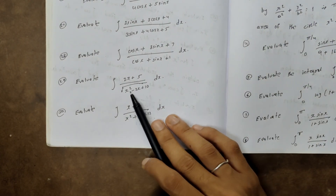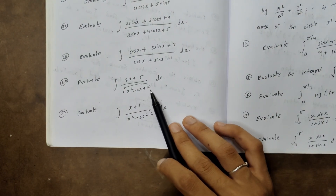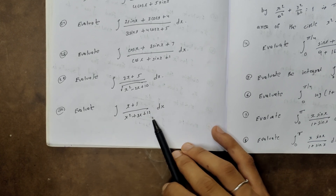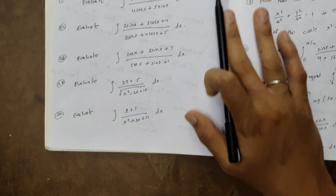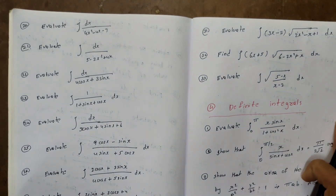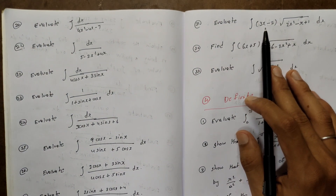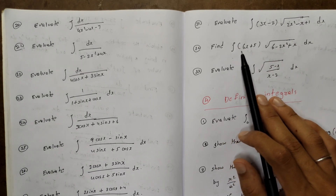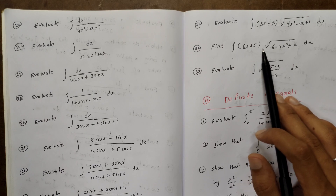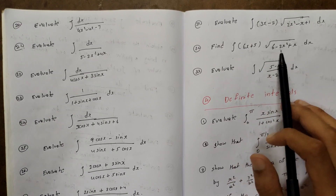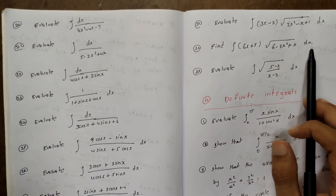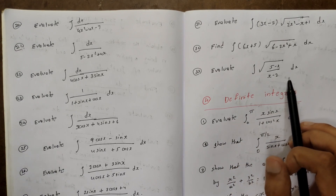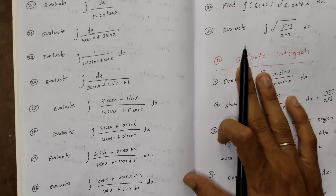Evaluate ∫dx/(4x²-4x-7). Evaluate ∫dx/(5-2x²+4x). Evaluate ∫dx/(4cosx+3sinx). Evaluate ∫1/(1+sinx+cosx) dx. Evaluate ∫dx/(3cosx+4sinx+6). Evaluate ∫(9cosx-sinx)/(4sinx+5cosx) dx. Evaluate ∫(2cosx+3sinx)/(4cosx+5sinx) dx. Evaluate ∫(2sinx+3cosx+4)/(3sinx+4cosx+5) dx. Evaluate ∫(2x+5)/√(2x²-2x+10) dx. Evaluate ∫(x+1)/(x²+3x+4) dx. Evaluate ∫(3x-2)/√(2x²-x+1) dx and ∫√((5-x)/(x-2)) dx.